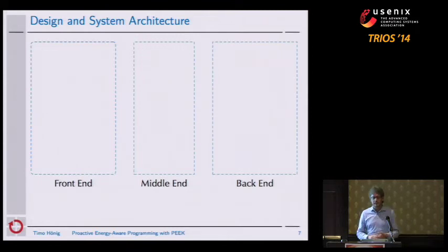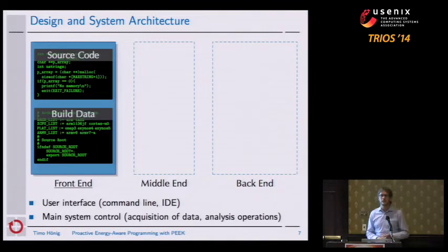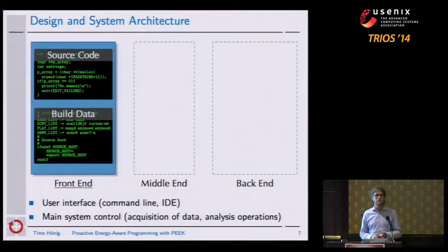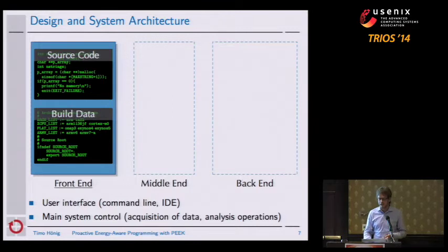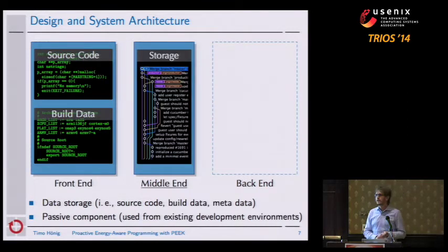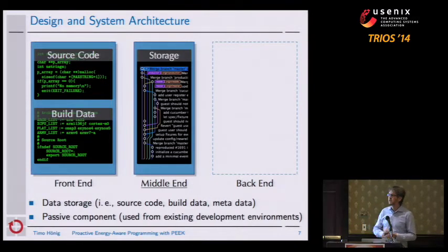Our framework is grouped into three main components: front-end, middle-end, and back-end. The front-end is the implementation at the programmer side, at the development infrastructure, and it provides the user interface. We implemented two different ones — one as a command-line interface and another as a plug-in for the Eclipse IDE. This main part of the system controls the rest of the energy analyzers. At the middle-end, we use a passive component for storing the actual source code we are working on, including source code and build data from the developer.